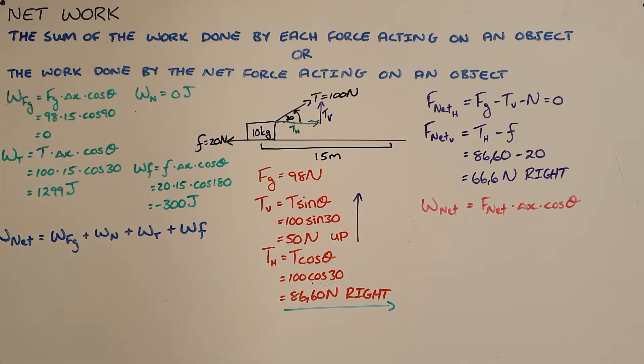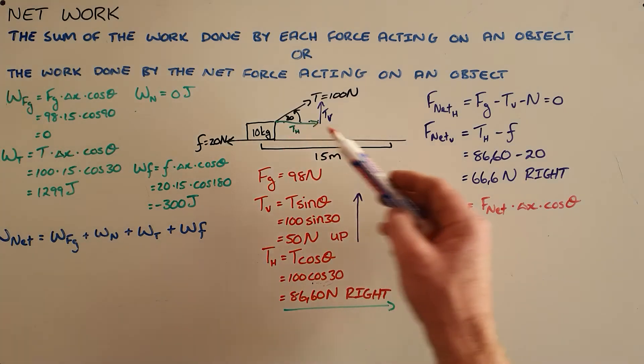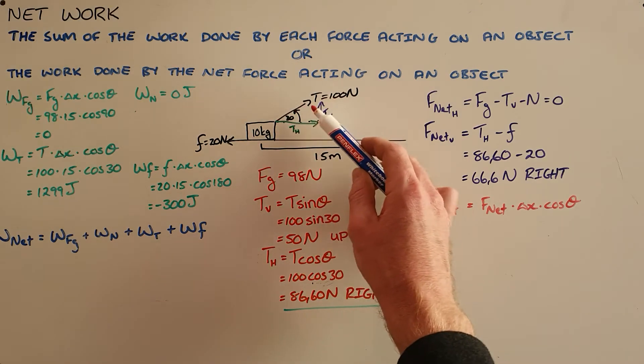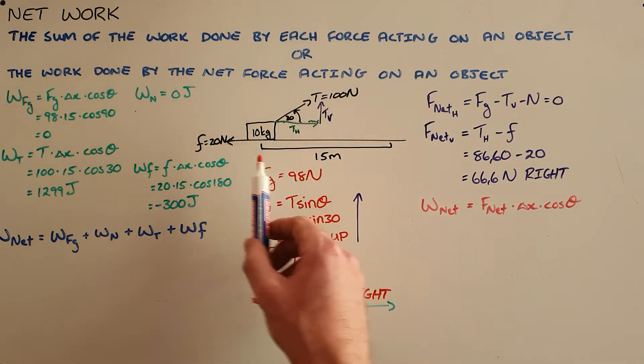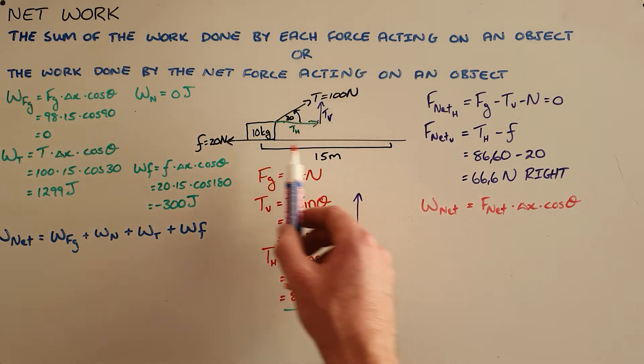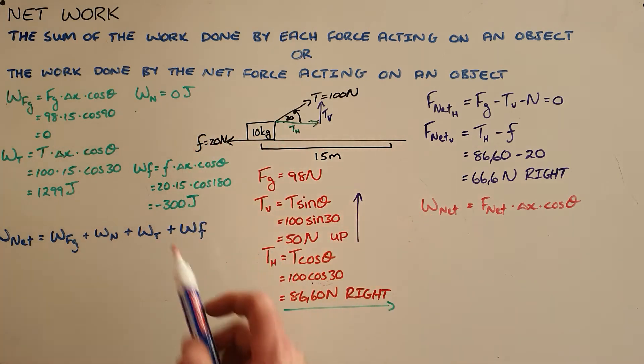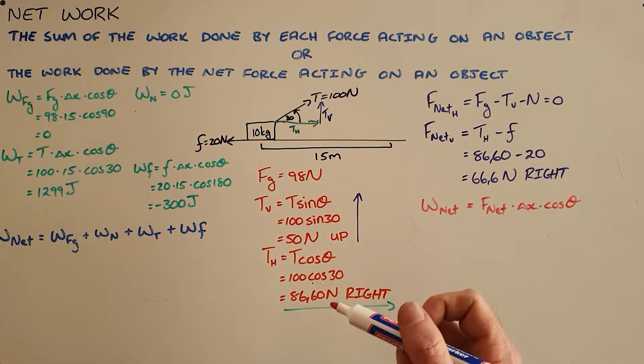The first way we will use this example over here, where we have a tension force of 100 newtons pulling an object 15 meters to the right across a horizontal surface with a frictional force of 20 newtons acting on that object.